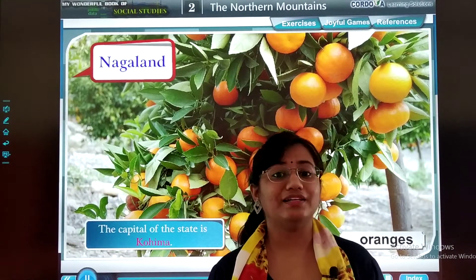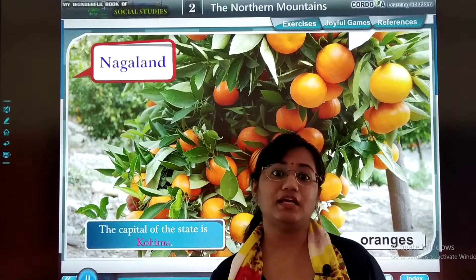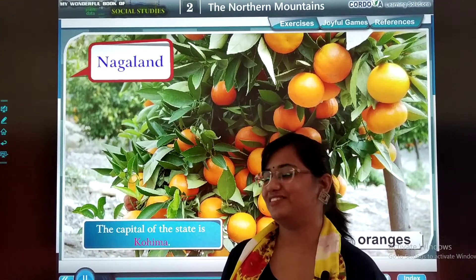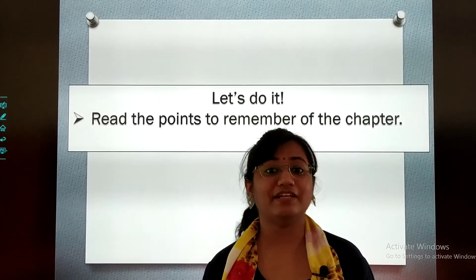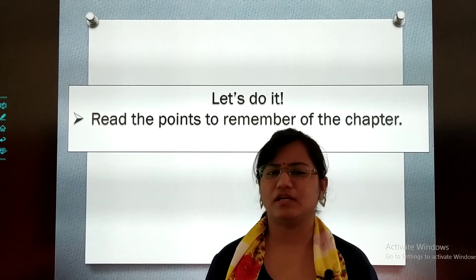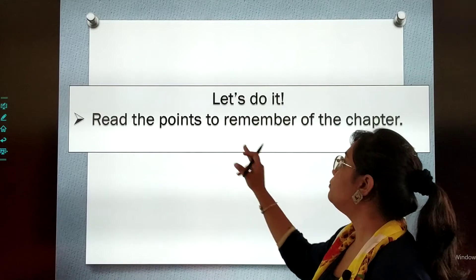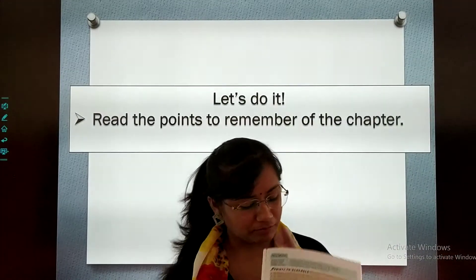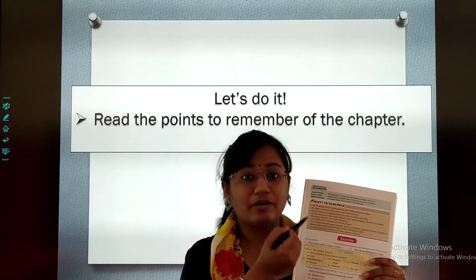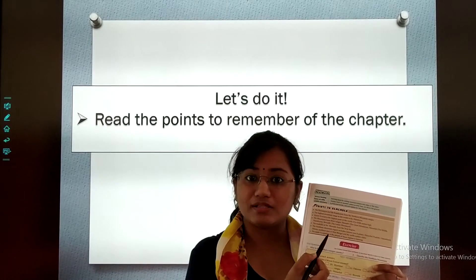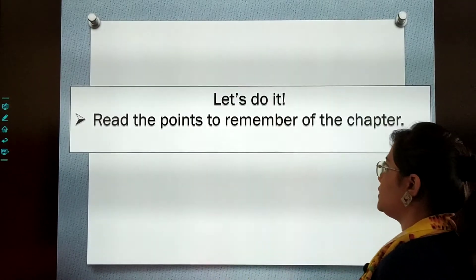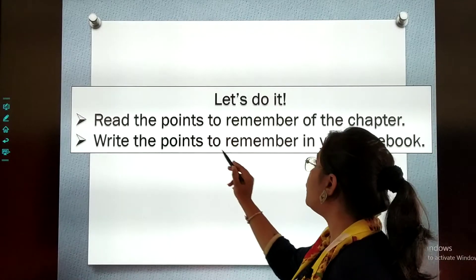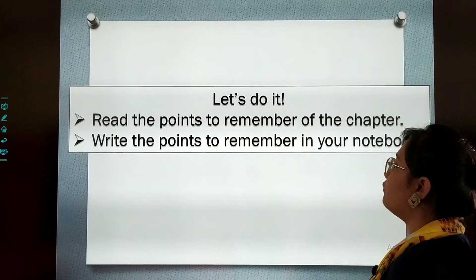I hope you are clear with all the topics. Here we complete Lesson Number 2: The Northern Mountains. What you have to do now: read the Points to Remember of the chapter — go through these points carefully. Always keep your textbook with you. Also, write the Points to Remember in your notebook.